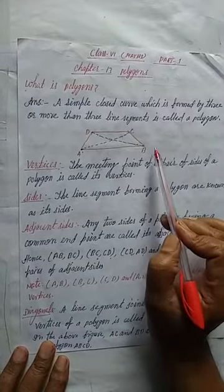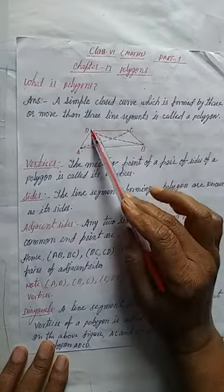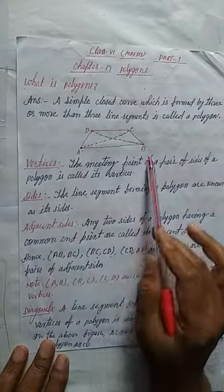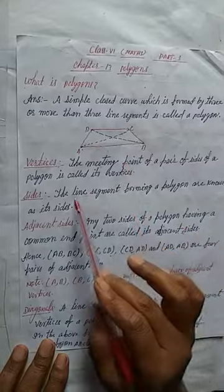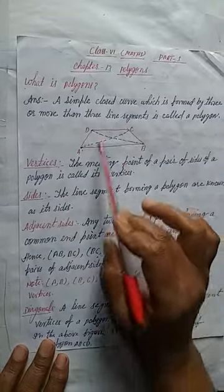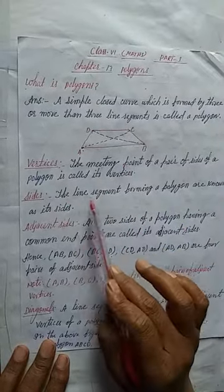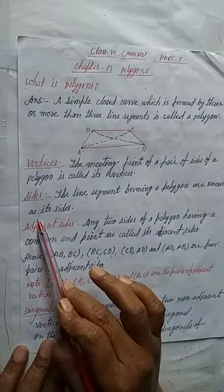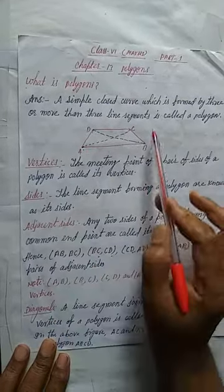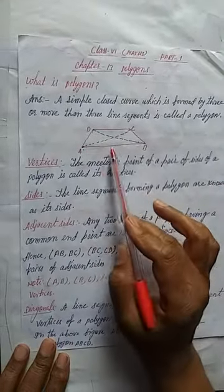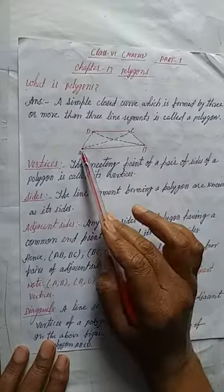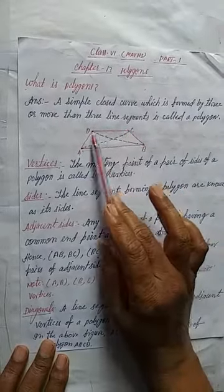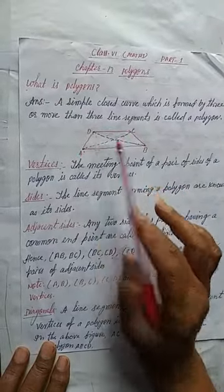We can say vertex A, vertex B, vertex C, vertex D. Now, sides — the line segments forming a polygon are known as its sides. So here the sides are AB, BC, CD, and DA.